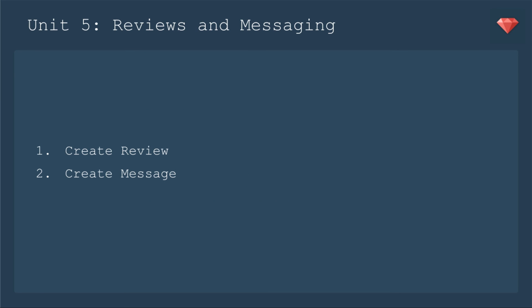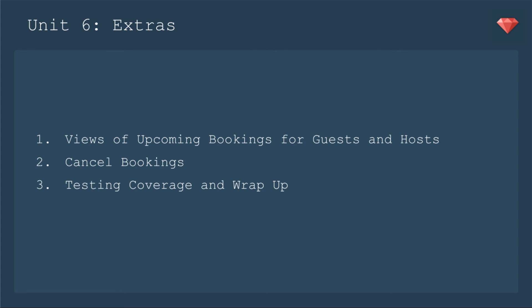In unit five, we will create a review and create a message. Then we have some extras in unit six. We'll have views of the upcoming bookings for guests and hosts. Then there's the unfortunate thing of cancel booking, so we do need to include that. Then we'll look at our testing coverage and wrap up any loose ends.